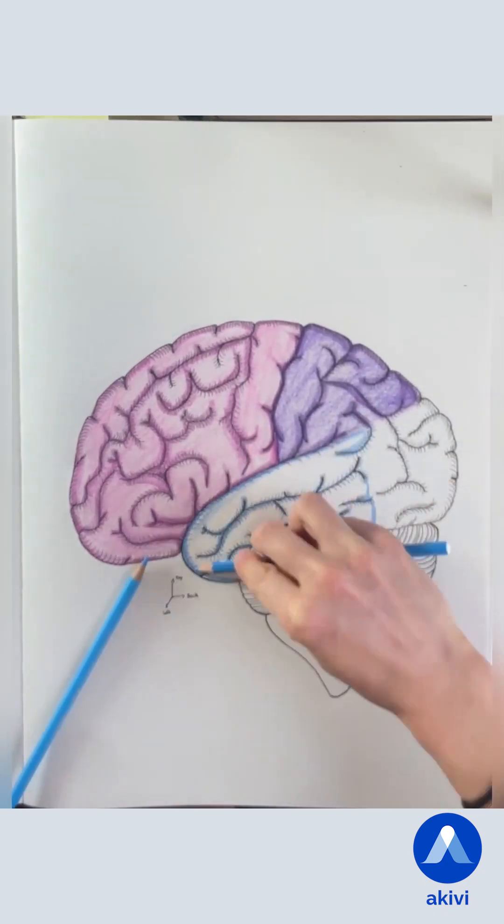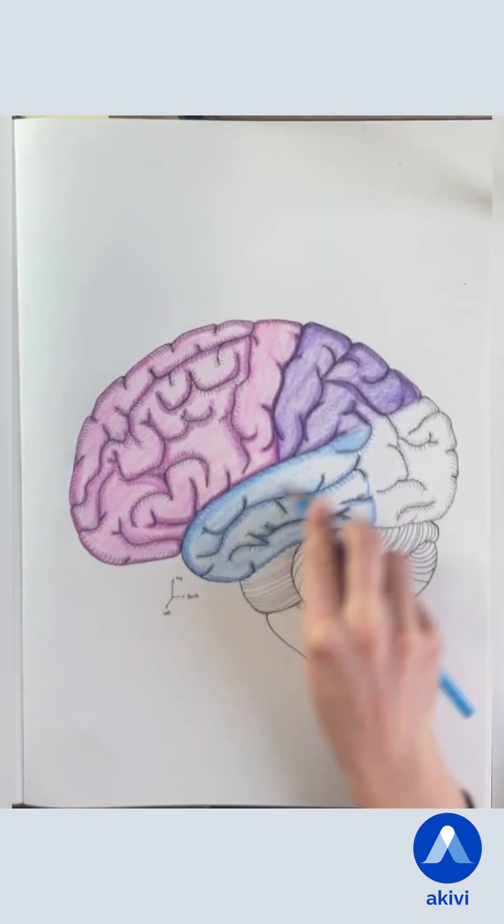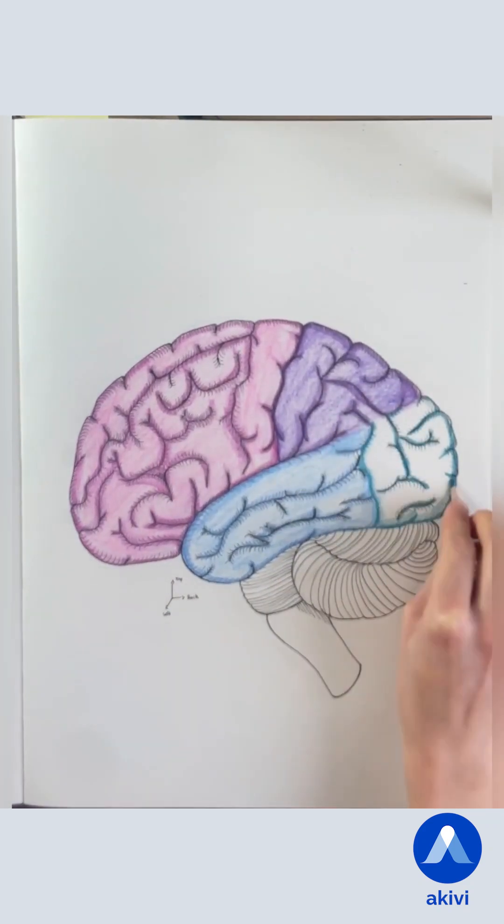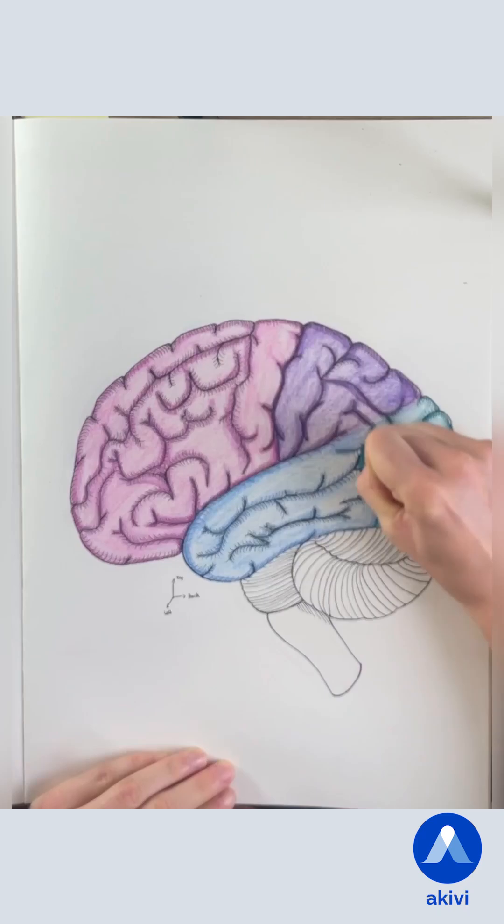The temporal lobe is the primary relay for auditory projections. Lastly, the occipital lobe is also a sensory lobe, as it holds the primary and secondary visual cortices.